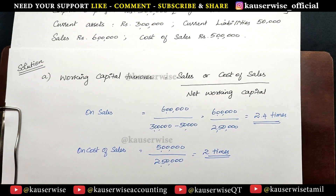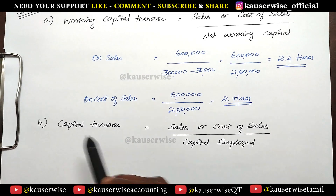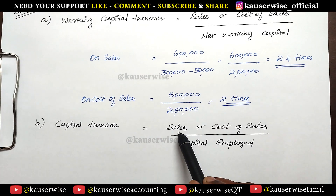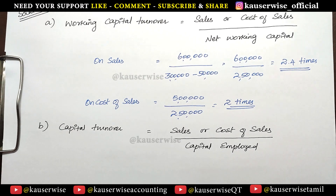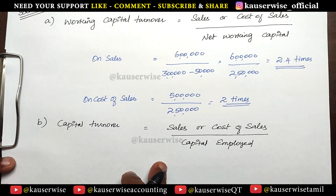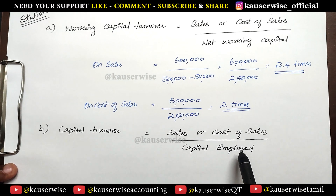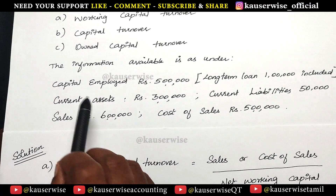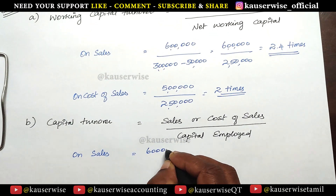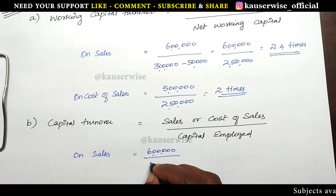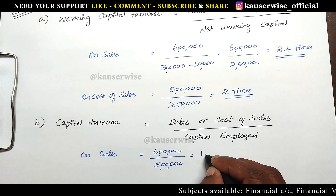Now we are going to find out the second one, that is capital turnover ratio. The formula for capital turnover ratio is sales or cost of sales divided by capital employed. So we are going to find out capital turnover ratio on sales as well as on cost of sales. Capital employed is also given in the problem. Sales is 6 lakhs and capital employed is 5 lakhs. So 6 lakhs divided by capital employed 5 lakhs gives 1.2 times.